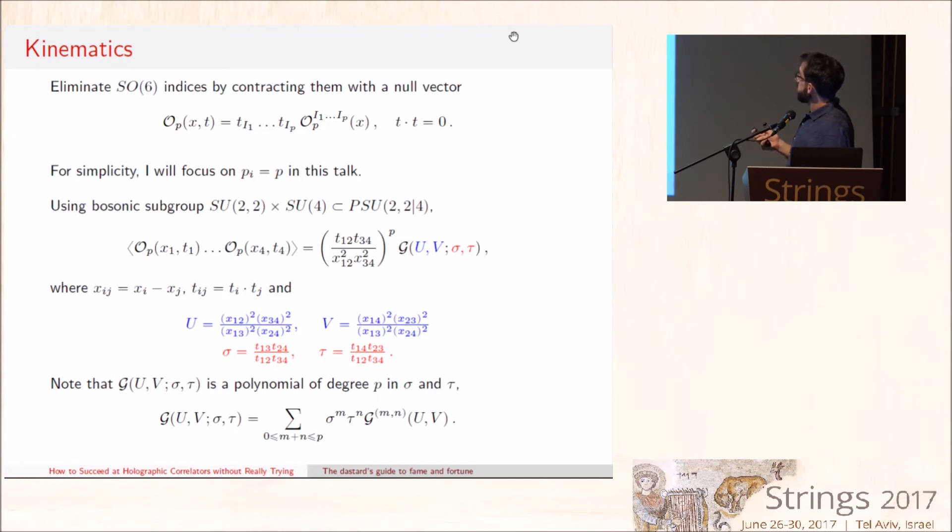What you should do is put the R-symmetry part on a somewhat symmetric footing as the spacetime part, so you contract the SO(6) indices with some null vectors. T lives in a six-dimensional space. For simplicity, I will focus on the four-point function with equal weights in most of the talk. Then it follows from the bosonic subgroups of the full symmetry group, which is the conformal and the R-symmetry group, that the correlation function is just a function of the two conformal cross ratios, U and V, which are the standard ones. I'm using capital letters, U and V, because soon enough, lowercase u will have a different use.